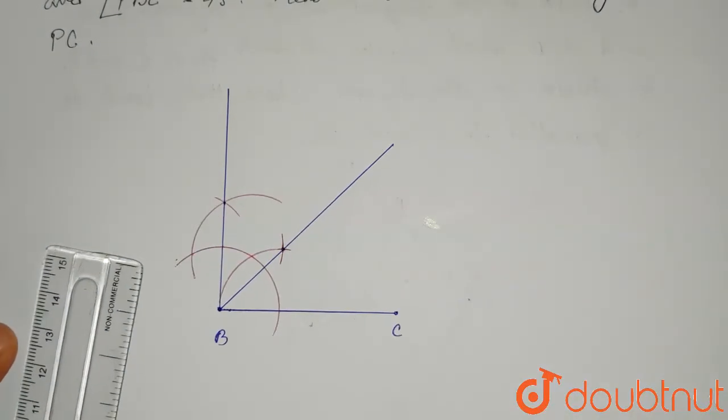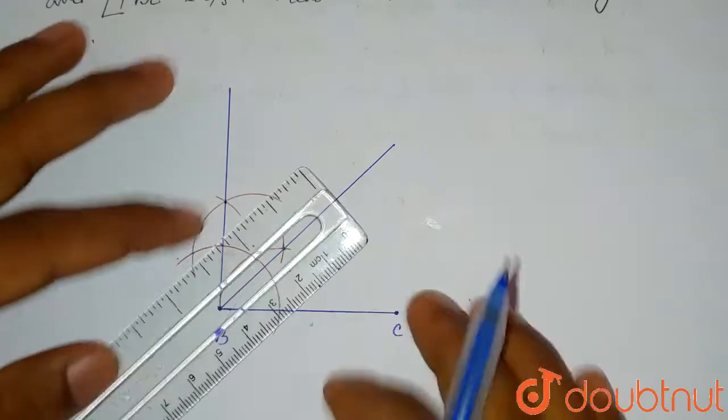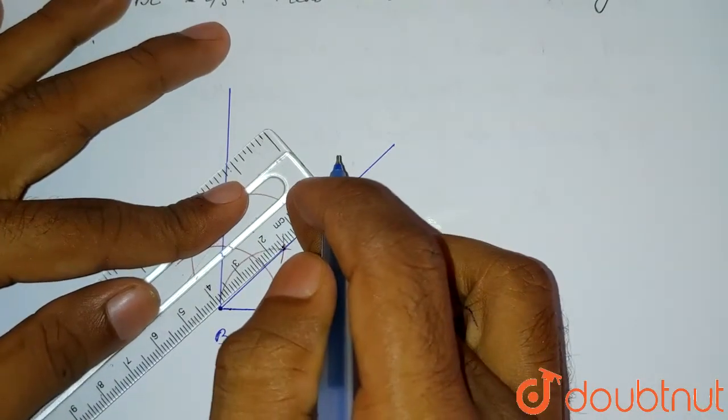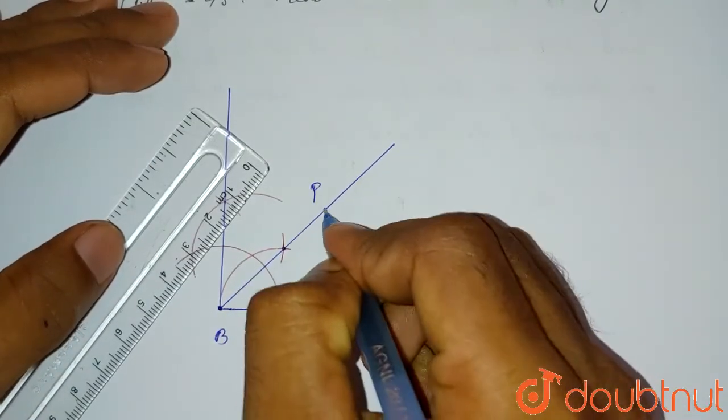Now it is said that PB is 4 centimeters. So from this line, we will take the 4 centimeter length. So let's place it at 4, then like this. This will be our P point.